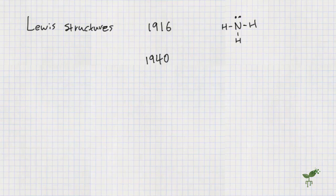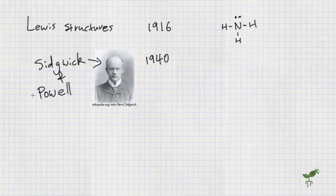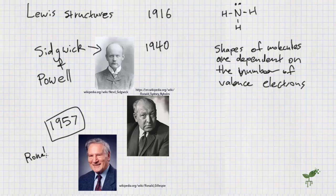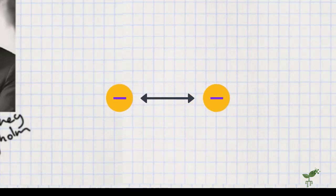So in 1940, Sidwig and Powell proposed that the shapes of molecules are dependent on the number of valence electrons. And then this was furthered in 1957 by an Australian scientist, Sidney Nyham, and Canadian Ronald Gillespie. They looked at how these electrons repel each other, and how this would apply to the shape of a molecule.